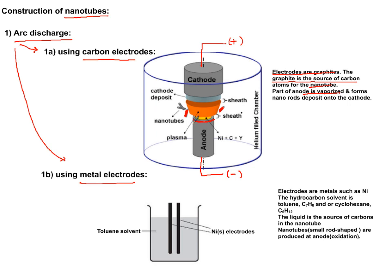This is the arc discharge using carbon electrodes. For the method using metal electrodes, you have the same setup with positive and negative alternating current. Instead of carbon graphite, we have two metal electrodes such as nickel.